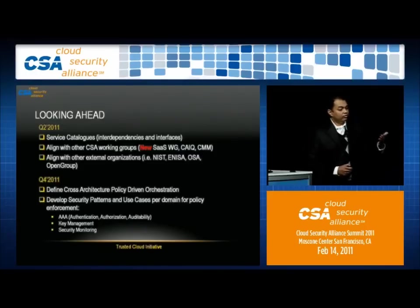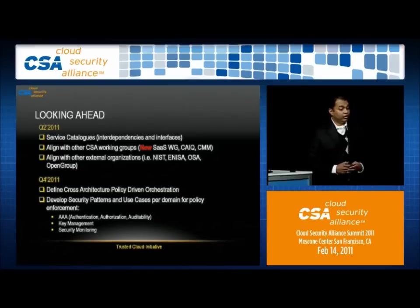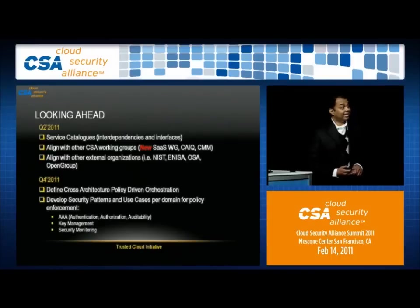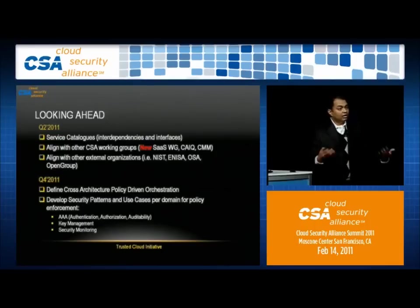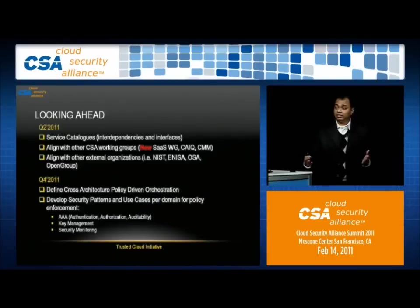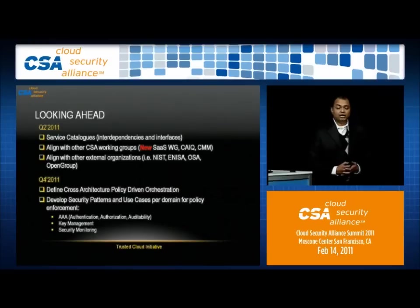Looking ahead, there will be delivery of service catalogs this calendar year, as well as alignment with other Cloud Security Alliance working groups such as the new SAS working group, CMM, and CIQ. The group is also aligning with external organizations like NIST, NISA, and Open Security Architecture, which are coming out with documents — trying not to work in isolation, but to come out with a reference architecture that is best of breed.